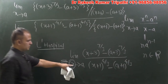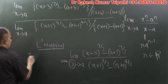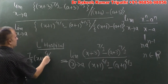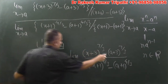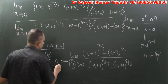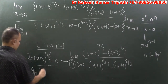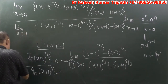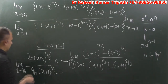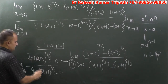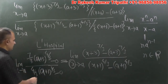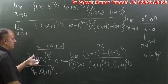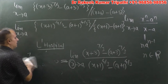Differentiating the numerator with respect to x gives 7/3·(x+3)^(4/3), and the derivative of the constant term is 0. The denominator differentiates to 4/3·(x+1)^(1/3), and its constant term's derivative is 0. Taking limit x tends to a and substituting x = a, we get the same answer as before.